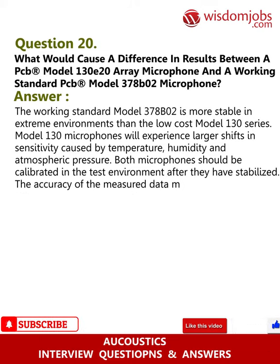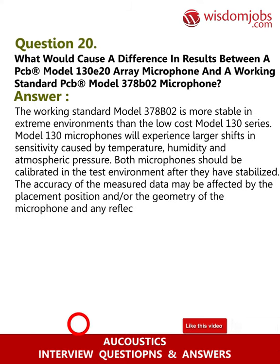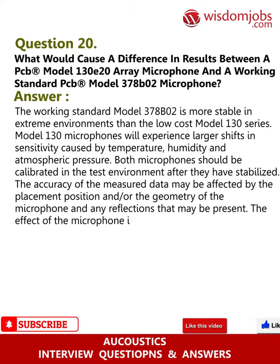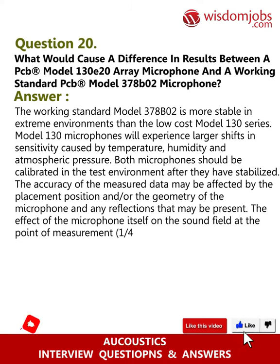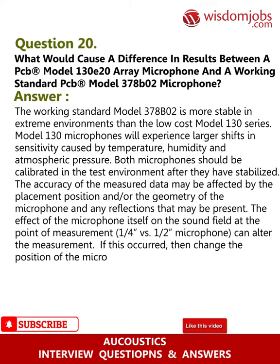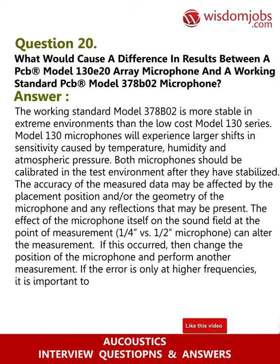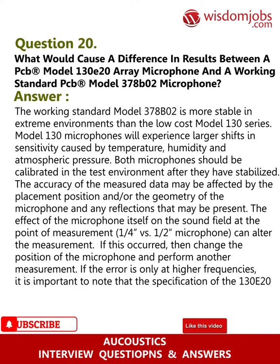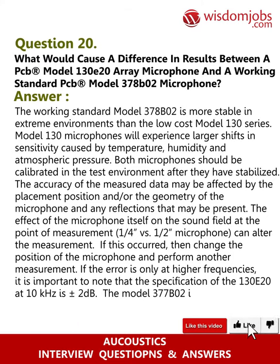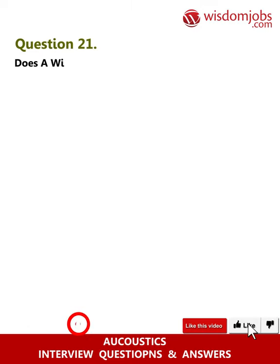The accuracy of the measured data may be affected by the placement position and geometry of the microphone and any reflections that may be present. The effect of the microphone itself on the sound field — one-quarter versus half-inch microphone — can alter the measurement. If this occurs, change the position of the microphone and perform another measurement. If the error is only at higher frequencies, note that the specification of the 130E20 at 10 kilohertz is plus or minus 2 decibels, while the 378B02 is flat to 20 kilohertz. Variations within tolerance may occur in specific instances.